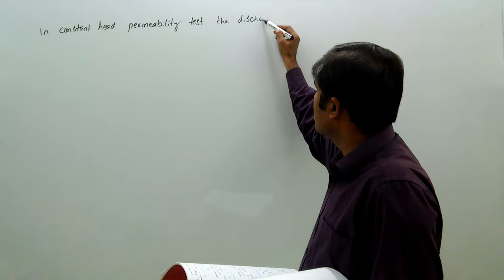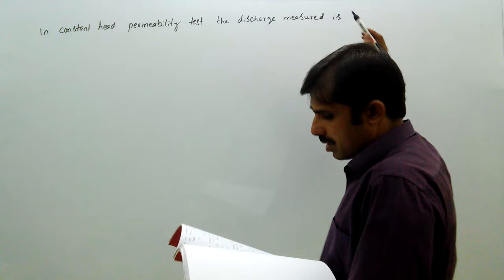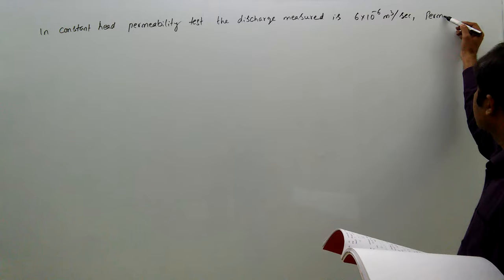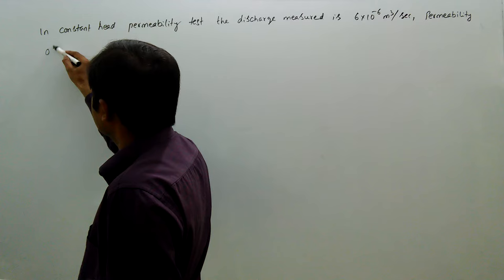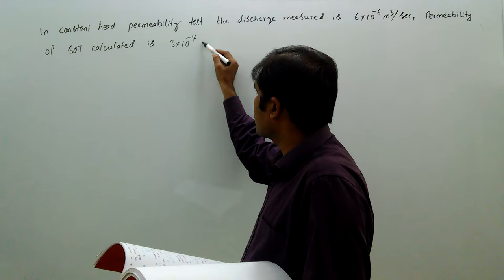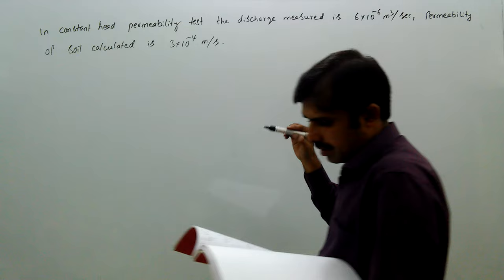Permeability of soil calculated is 3 into 10 power minus 4 meters per second. The diameter of the sample was 0.4 meters.